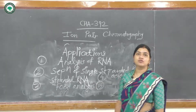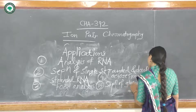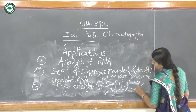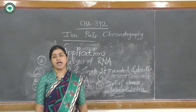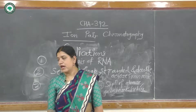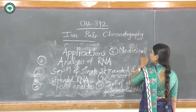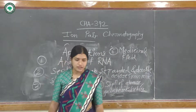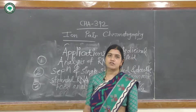It is also used for the separation of glucose, galactose, and lactose. The results obtained from ion pair chromatography have high accuracy and precision and give highly reproducible results. It has also found a major application in the medicinal field — it is particularly used for the analysis of paracetamol tablets. These are the applications of ion pair chromatography, covering its guidelines and various applications.